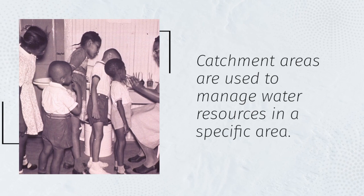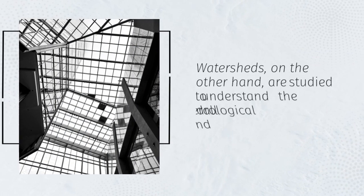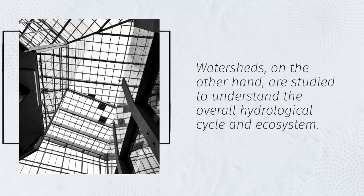Catchment areas are used to manage water resources in a specific area. Watersheds, on the other hand, are studied to understand the overall hydrological cycle and ecosystem.